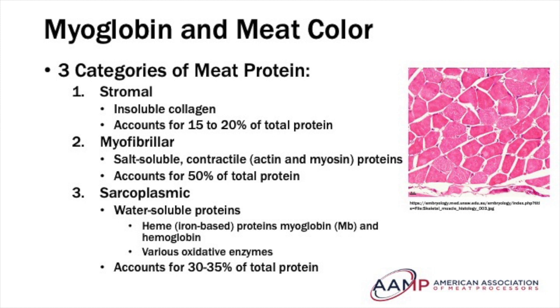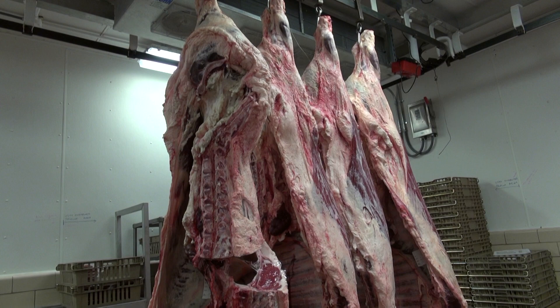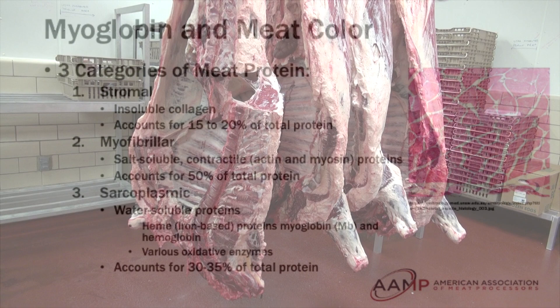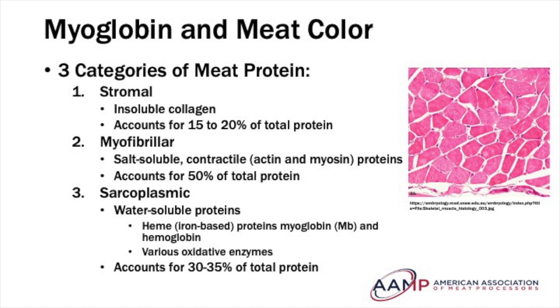Other pigments, such as hemoglobin, cytochrome, and various catalase enzymes, also contribute to meat color, but to a far lesser extent. The majority of hemoglobin is removed from the animal carcass during the bleeding or exsanguination step of the slaughtering process. Myoglobin is an iron-based, or heme protein, that is found exclusively in heart and skeletal muscle cells. In live muscle, myoglobin functions as an oxygen-binding protein that stores and delivers oxygen to cells.